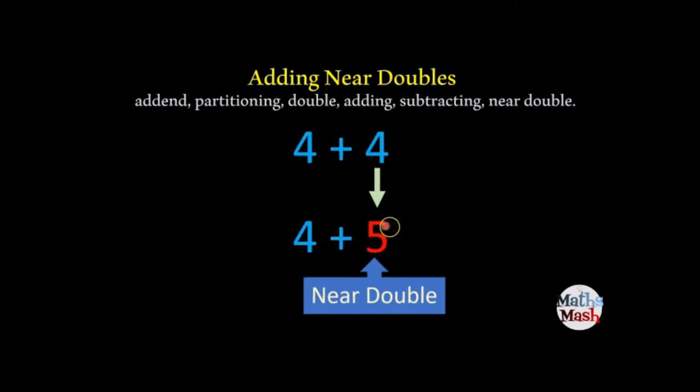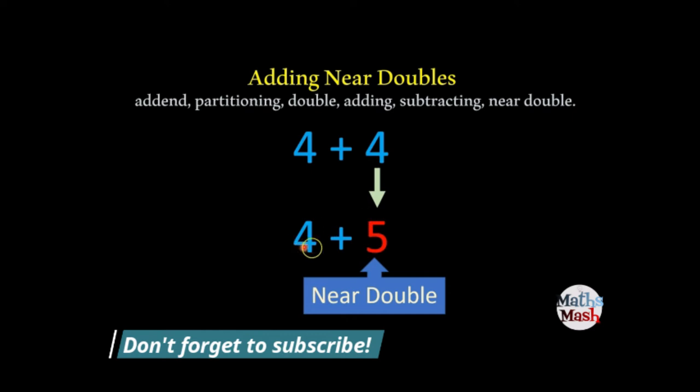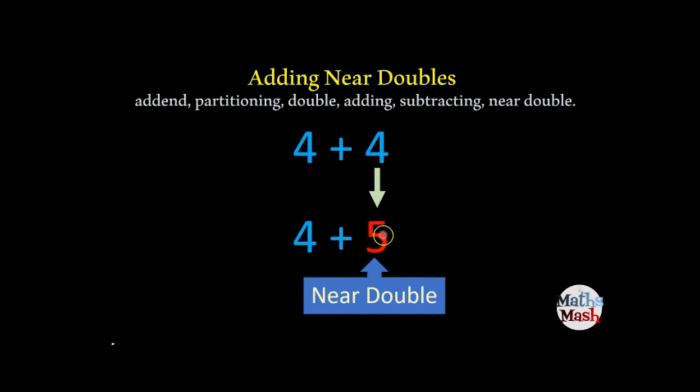Alright, so another example where we have 4 plus 4. If we wanted to change that into a near double, we could say 4 plus 5. Again, 5 is a near double of 4. Or it could be 3 or 6. 2 could be a near double of 4 as well as could be 3. So near doubles, there are lots of near doubles for every number.